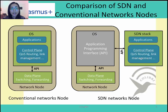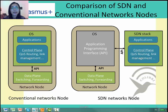Now let's compare the SDN and the conventional network nodes. As you see here, the control functions such as QoS routing and link management, along with the data forwarding functions, are located in the same device in conventional network nodes. But in the SDN switch, there is only the data forwarding function and an application programming interface which allows an outside controller to program the data forwarding function. We can clearly see that the control plane is physically decoupled from the data plane in the SDN switch, making it a very simple device that can be easily standardized.